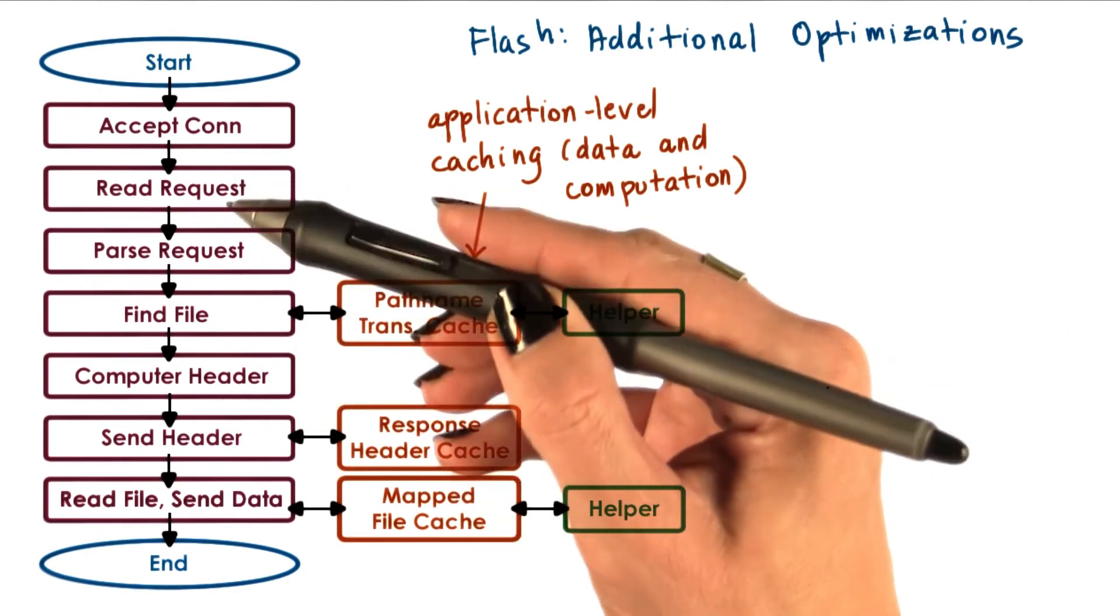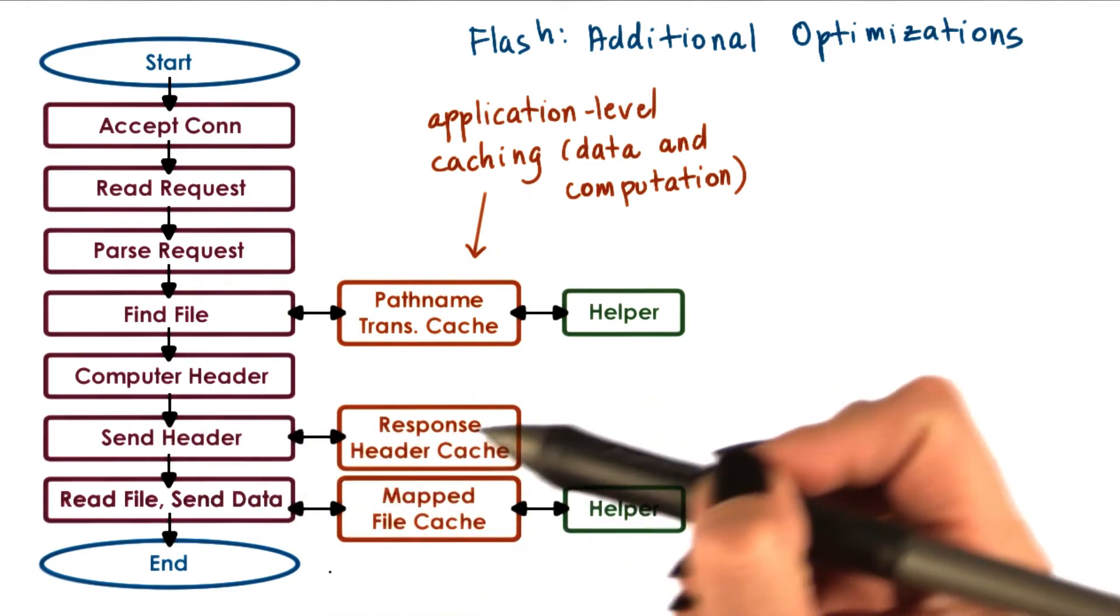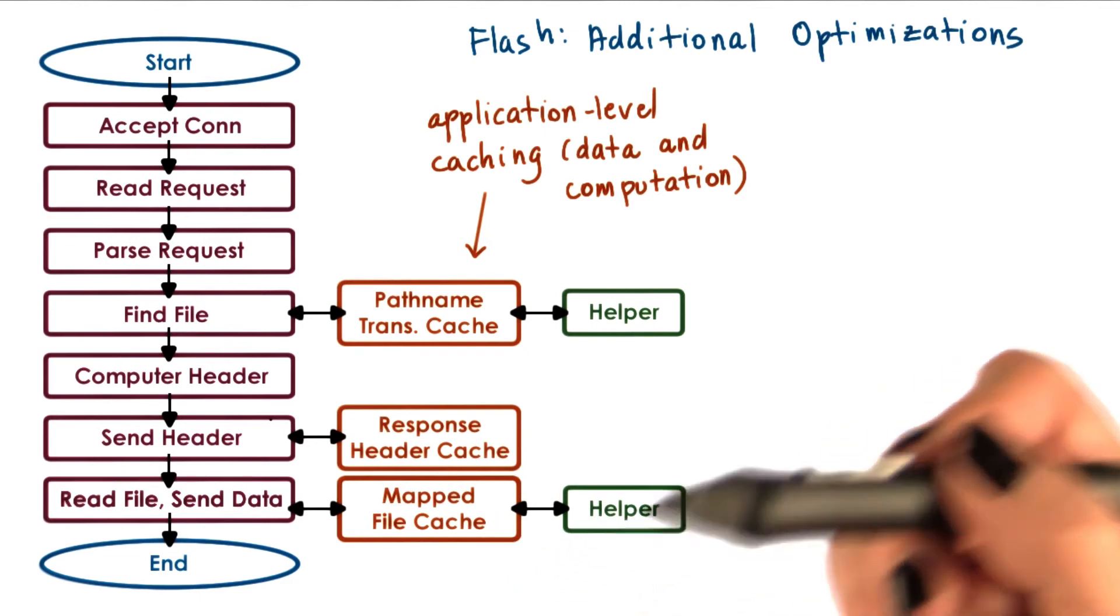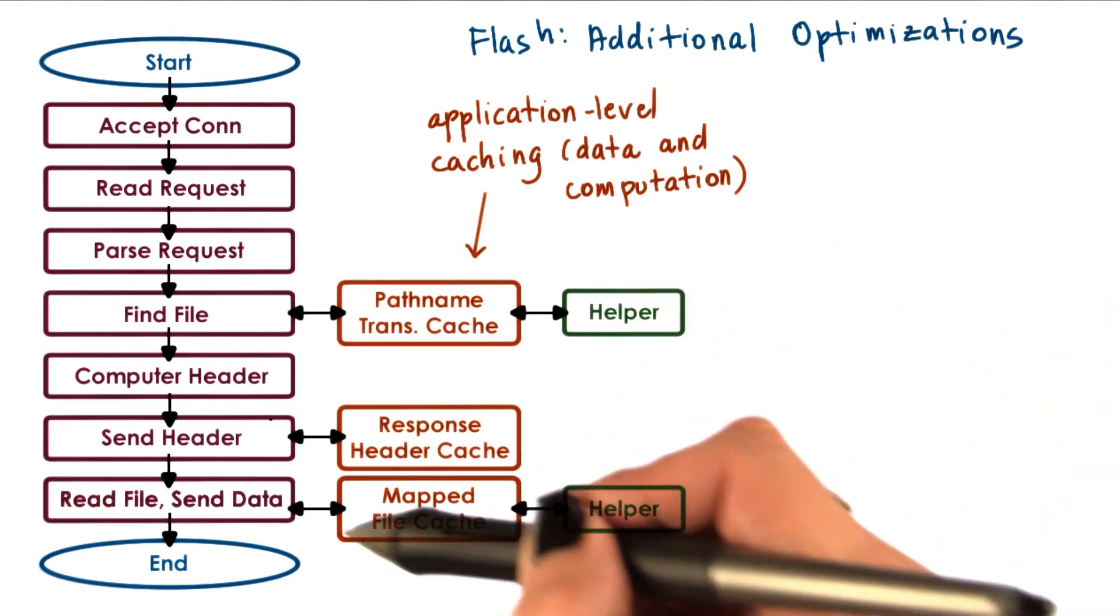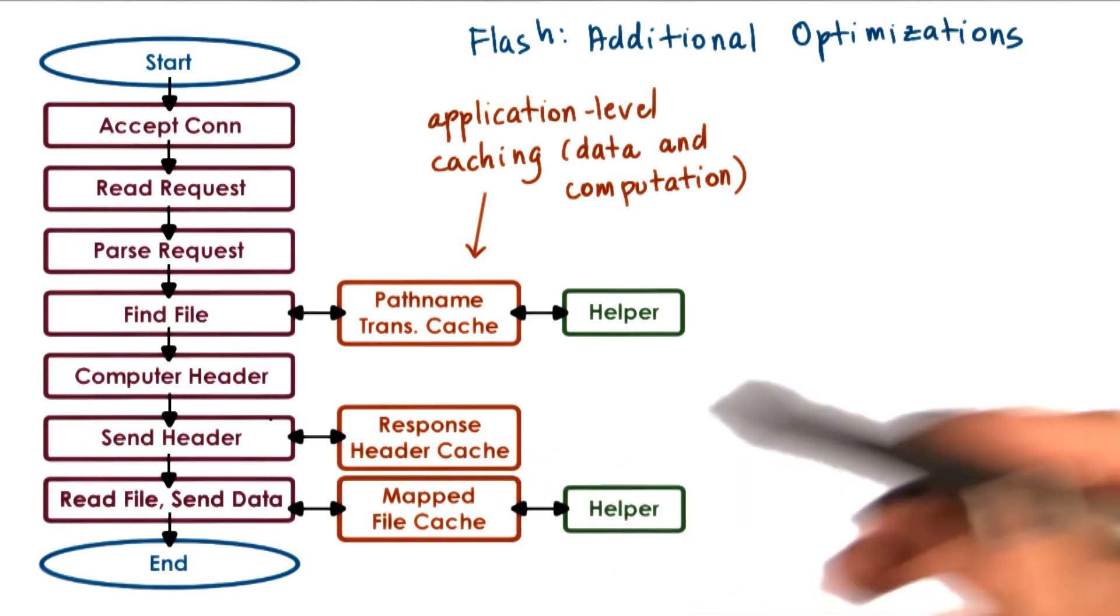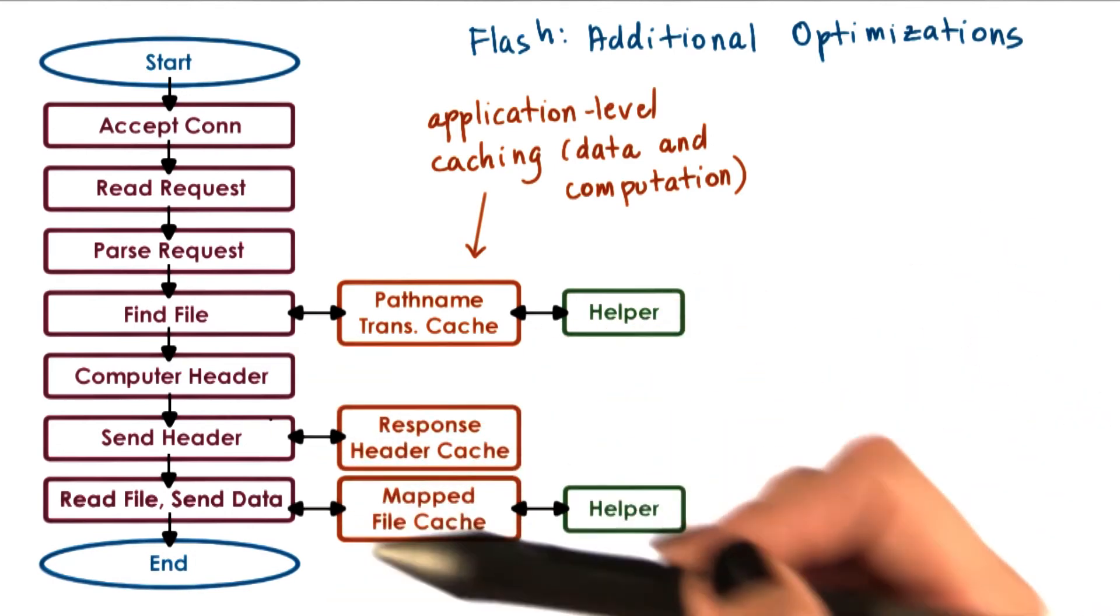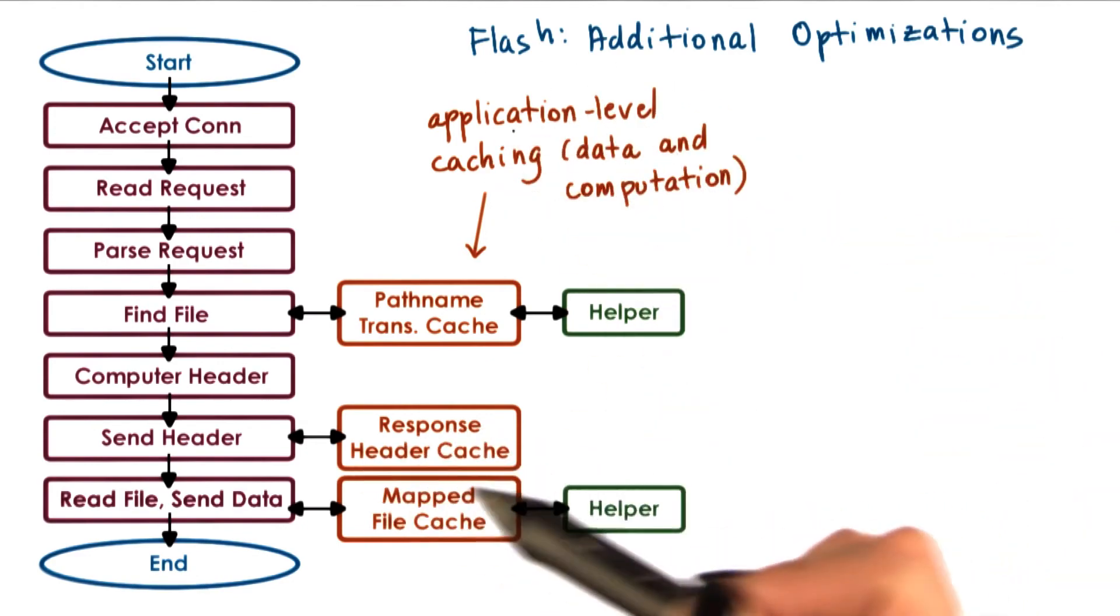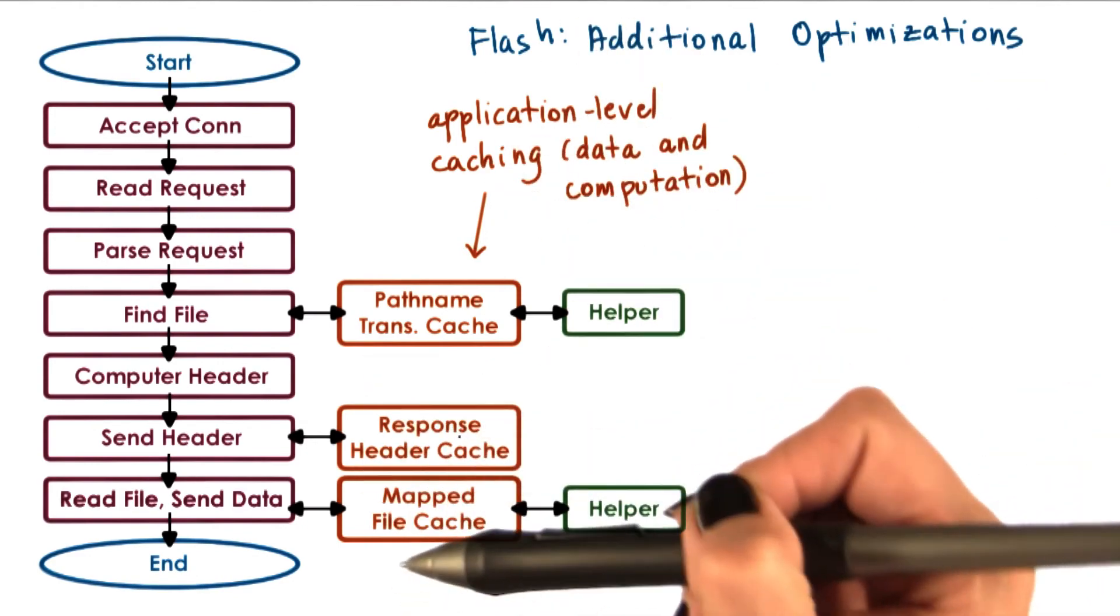Similarly, in the context of web processing, the HTTP header for files returned to the browser depends on the file itself—many fields are file-dependent. Given that the file doesn't change, the header doesn't have to change. This is another type of application-level caching that Flash performs.